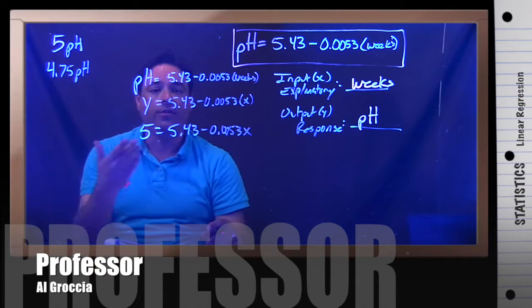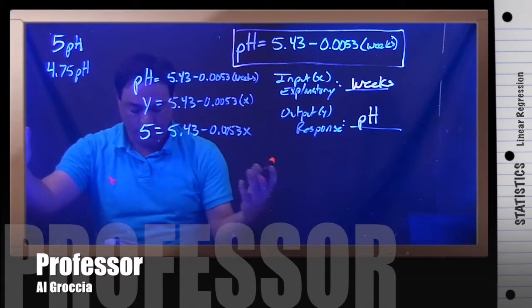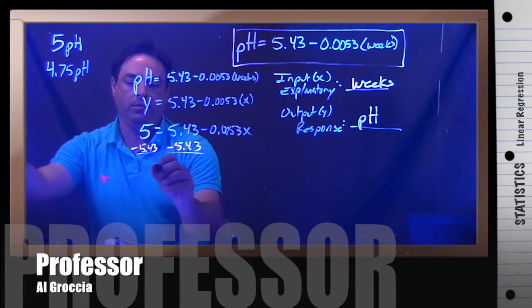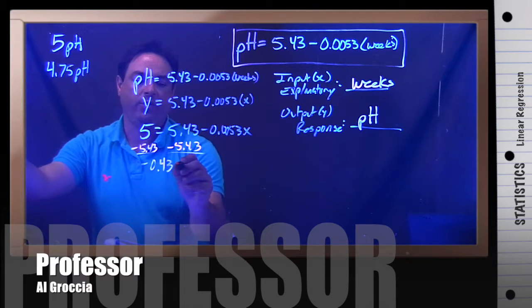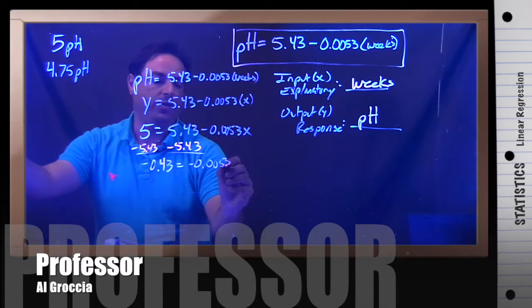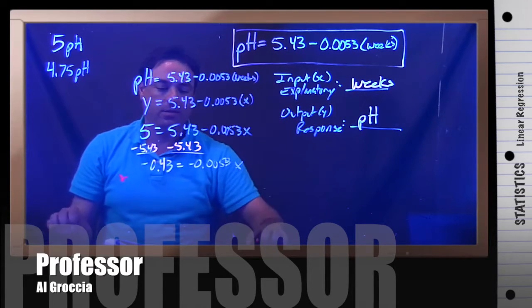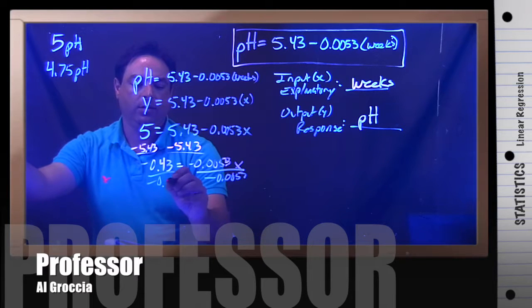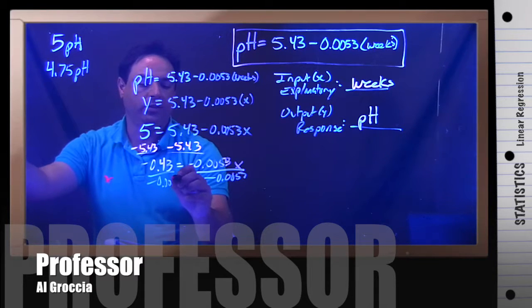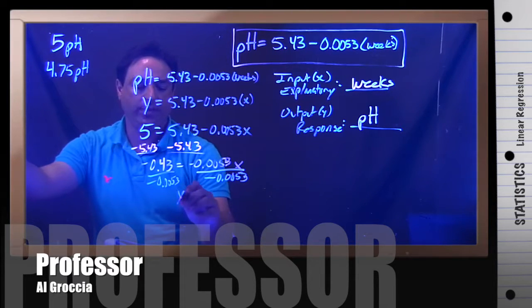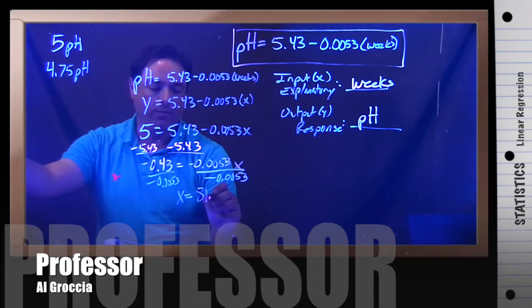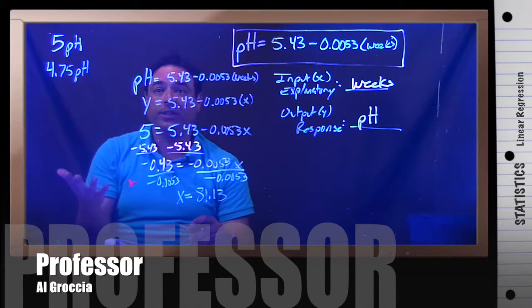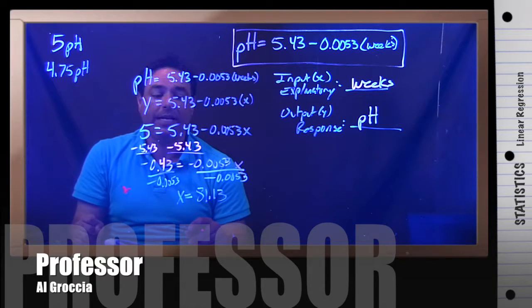Then we're going to have to solve for x. So we will subtract 5.43 from both sides. Negative 0.43 equals negative 0.0053x. Then to isolate x, divide by negative 0.0053, which will give us our answer of 81.13. So in a sentence, the pH will reach 5 at an estimated or predicted week 81.13.